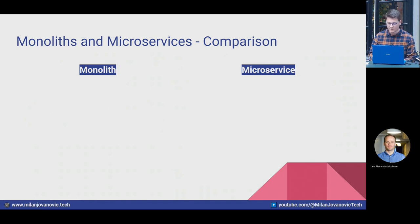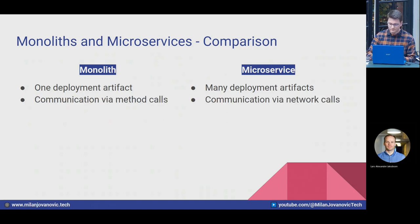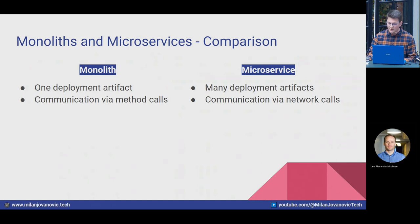Let's do a side-by-side comparison of monoliths and microservices. When it comes to deployment units, in a monolith you have just one deployment unit; in microservices each service is its own deployment unit. For communication, in a monolith components typically communicate via in-memory method calls, which are synchronous and very fast. With microservices, services communicate through network calls — HTTP, gRPC, messages over a queue — which introduces some interesting characteristics.